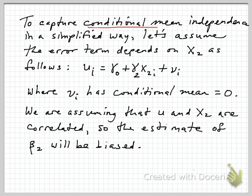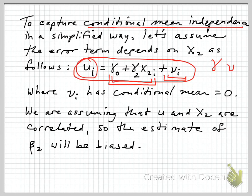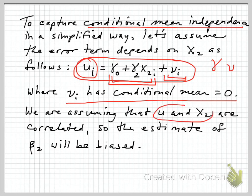To capture the idea of conditional mean independence in a very simplified way, I'll follow what Stock and Watson do in their appendix 7.2, and assume that the error term u has the following structure. The error term u_i is going to be a linear function of x2 — the control variable — plus this other little error term nu, with a coefficient gamma. So the overall error term for the regression, u, is a linear function of x2 plus a leftover random part, nu. And nu we're going to assume has conditional mean zero — nu is basically uncorrelated with anything, pure noise — but the error term overall, u, does depend on x2.